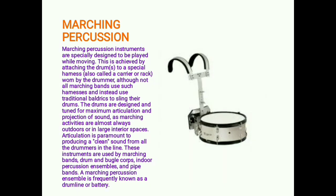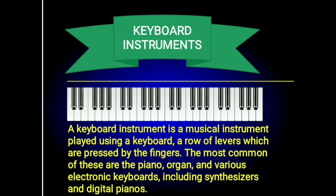Marching percussion instruments are specially designed to be played while moving. This is achieved by attaching the drums to a special harness, also called a carrier or rack, worn by the drummer. The drums are designed and tuned for maximum articulation and projection of sound, since marching activities are almost always outdoors or in large interior spaces. These instruments are used by marching bands, drum and bugle corps, indoor percussion ensembles, and pipe bands. A marching percussion ensemble is frequently known as a drum line or battery.